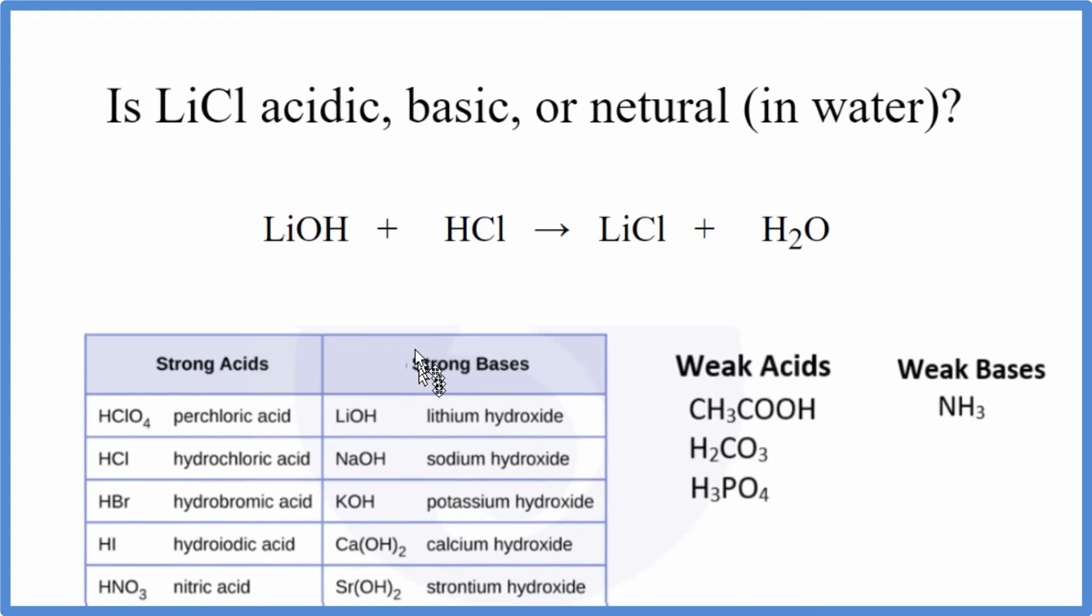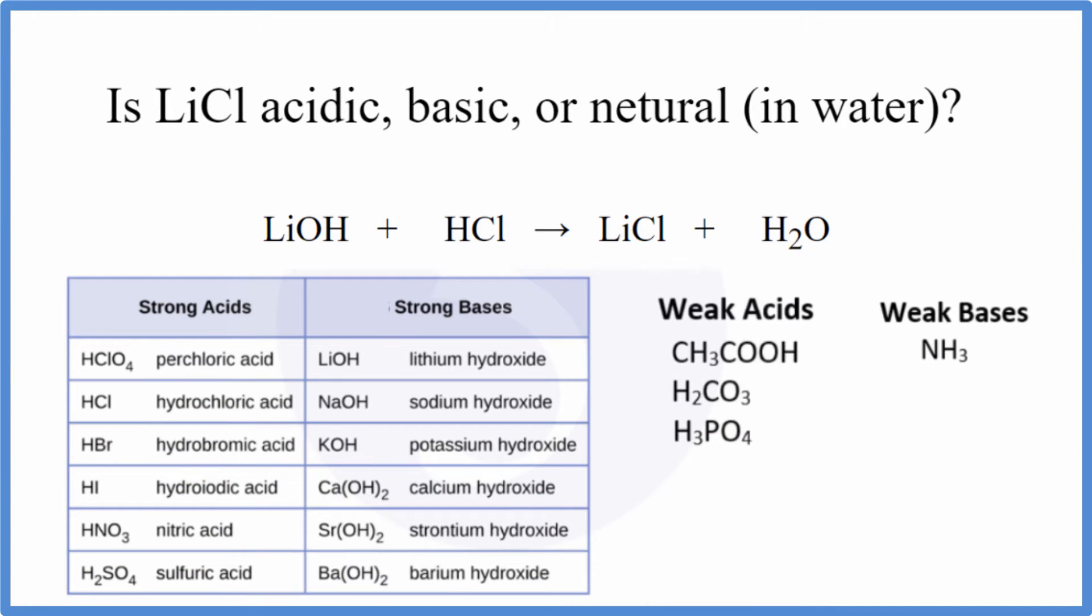When we look at the table here, we can see that for lithium hydroxide, that is right here. It's a strong base. So I'm going to write SB up here, strong base. And then hydrochloric acid, that's a strong acid. So I'm going to write SA for a strong acid. So now we know the character of these two substances.